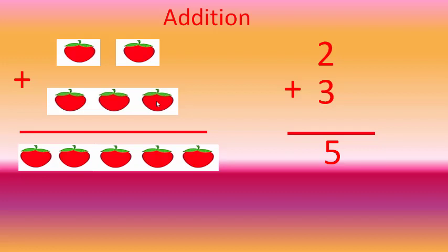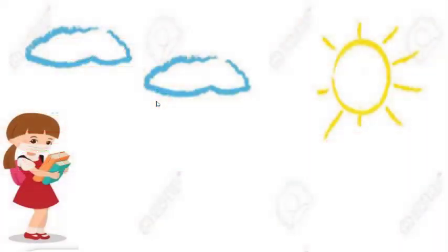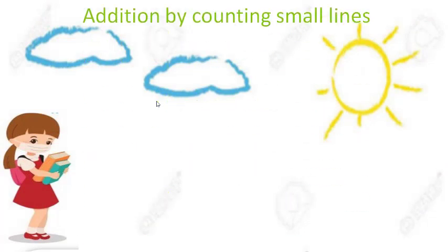Now we are moving towards the next method of addition, that is addition by counting small lines. This is the easiest way of addition. Let us start.